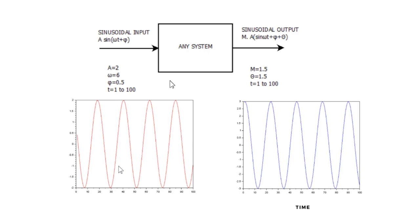Therefore, we sometimes put s equal to jω in the transfer function. So for any system which has a transfer function G(s), we put s equal to jω. This will be discussed further in a moment.